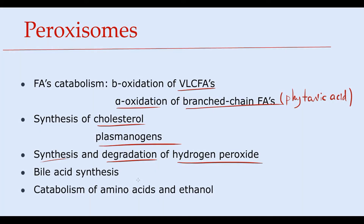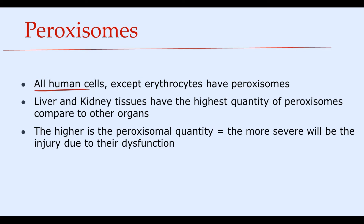In addition, peroxisomes participate in other metabolic pathways such as bile acid synthesis, catabolism of amino acids and ethanol. The two processes of fatty acid oxidation depend only on peroxisomal functional state, and no other organelle can deal with very long-chain fatty acids or branched-chain fatty acids. All human cells except erythrocytes contain peroxisomes, but liver and kidney have the highest quantity. Peroxisomal disorders affect every organ system where peroxisomes are present; the higher the quantity, the more severe the injury.